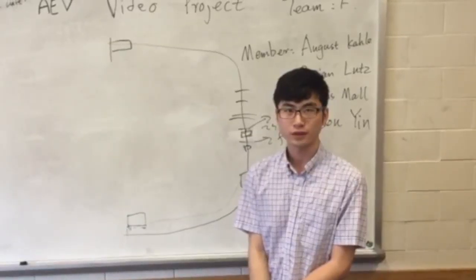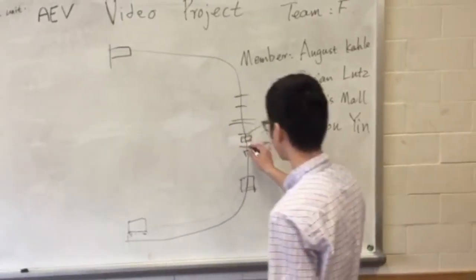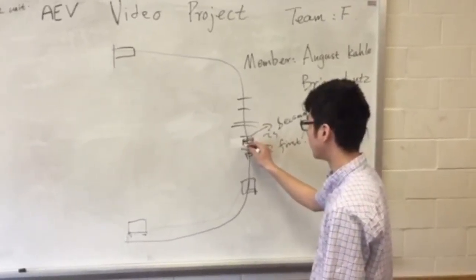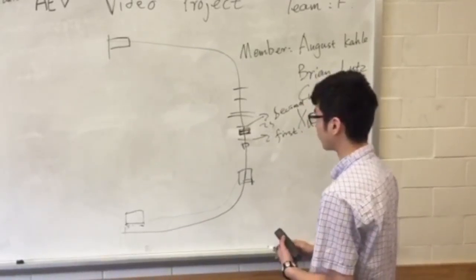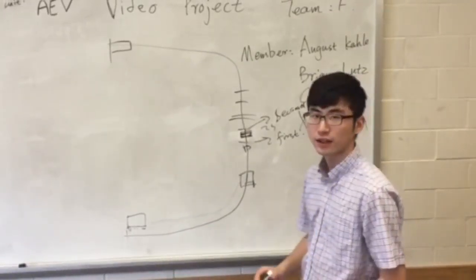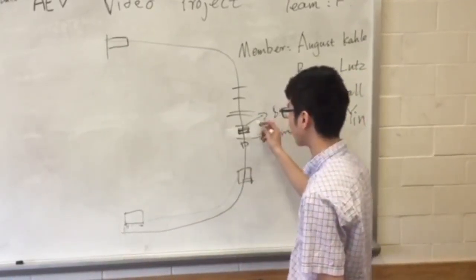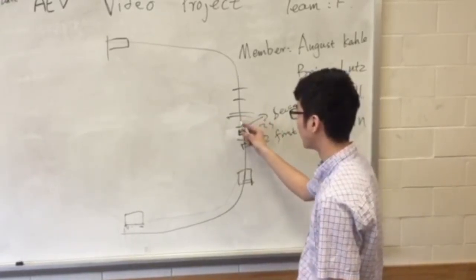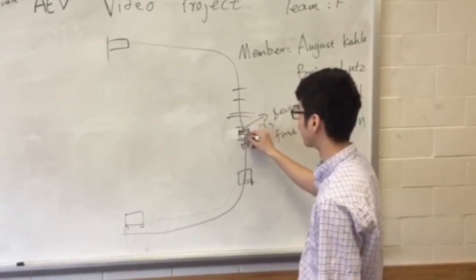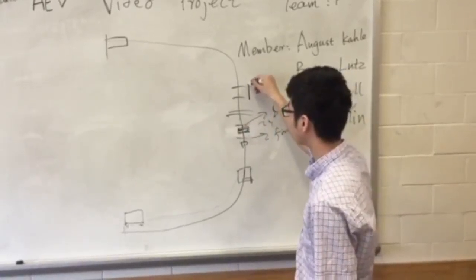So here, once we stop the AEV exactly, then we have to wait for 7 seconds in order to let the gate open. And once the gate opens, then the AEV can start to go in this direction.